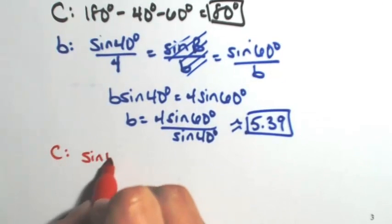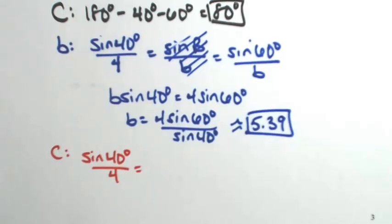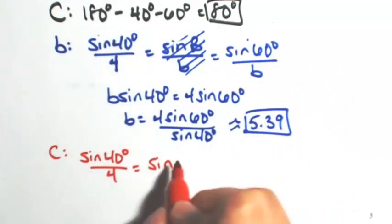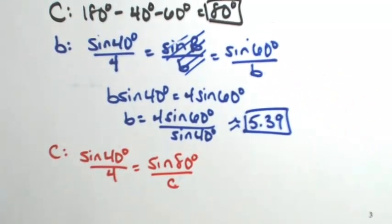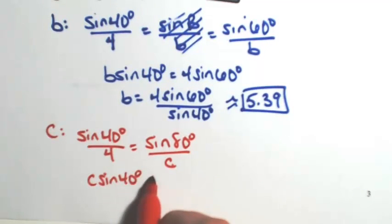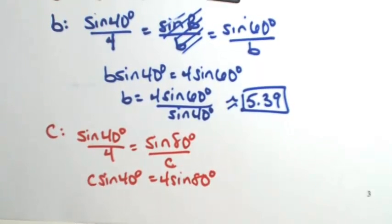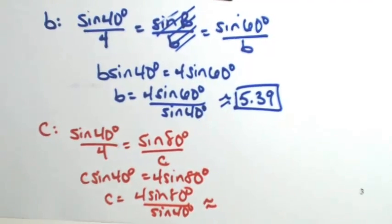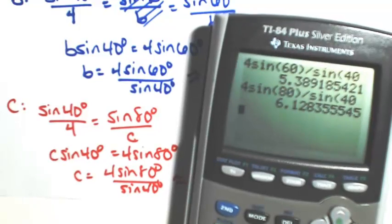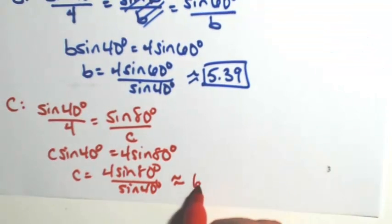Using the given ratio of sine 40 degrees over 4, this is now going to equal sine of angle C over c. That's sine of 80 degrees over c. Cross multiplying, c sine 40 degrees equals 4 sine 80 degrees. So c is 4 sine 80 degrees over sine 40 degrees, or about 6.13.